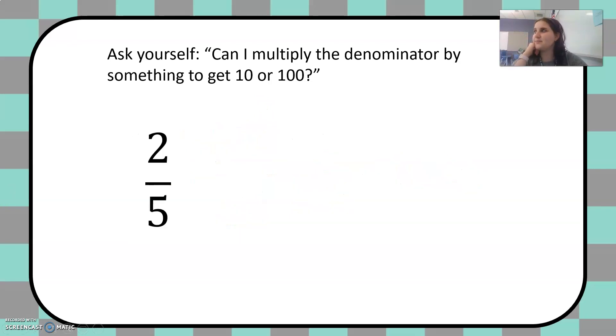Let's try another one. Two-fifths, two over five. What can I multiply the denominator by to get 10 or 100? So five. If I multiply five by two, I get 10. And whatever we do to the bottom, we have to do to the top as well. So two times two is four. So that means two-fifths is equal to four-tenths.